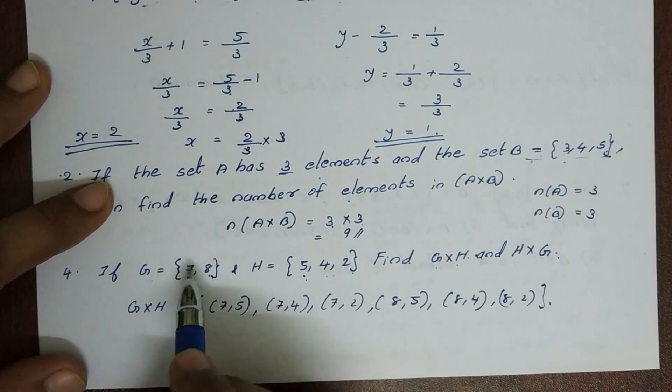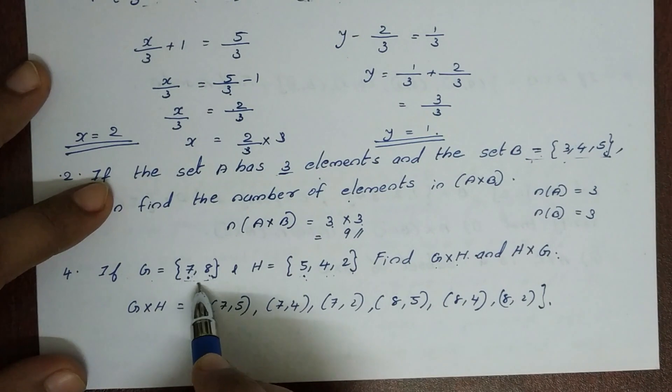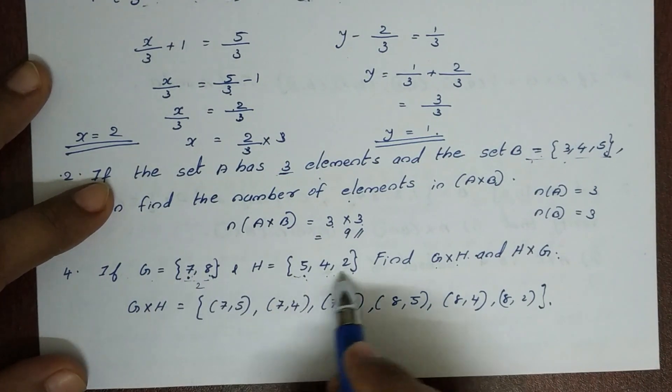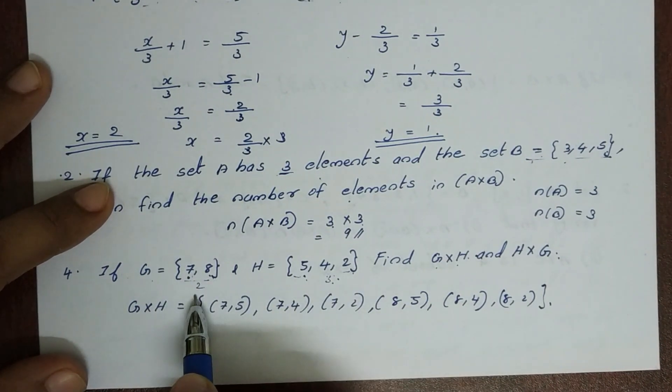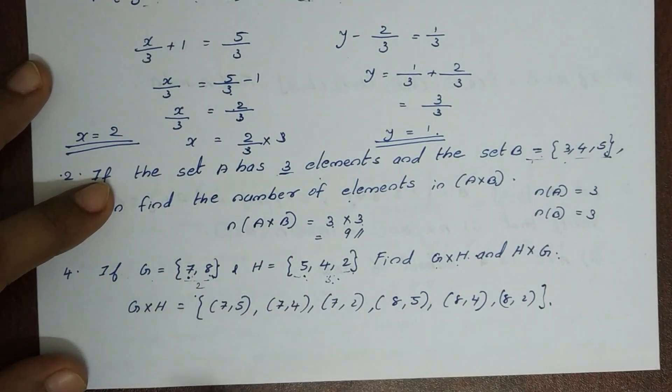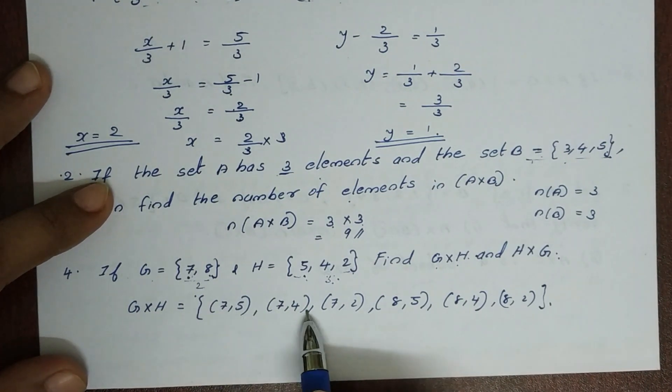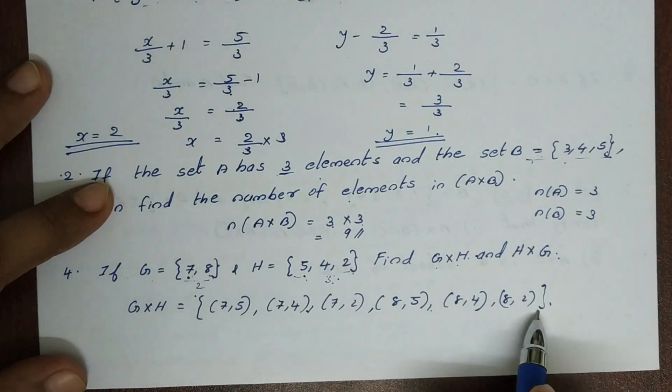In G×H, since G has 2 elements and H has 3 elements, 3 × 2 = 6 ordered pairs total.